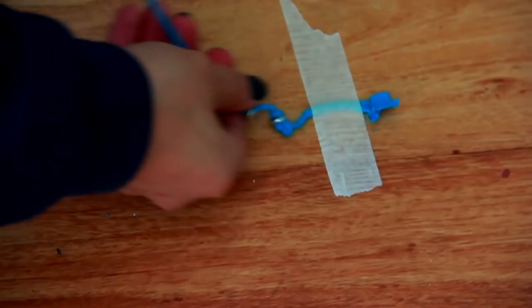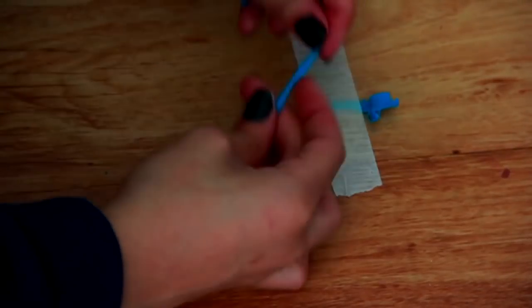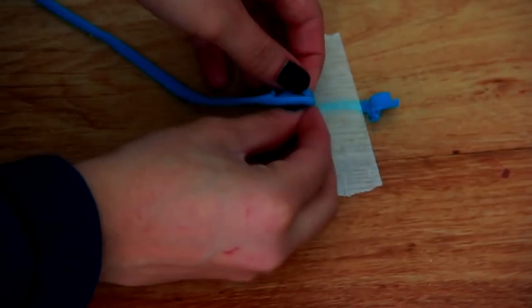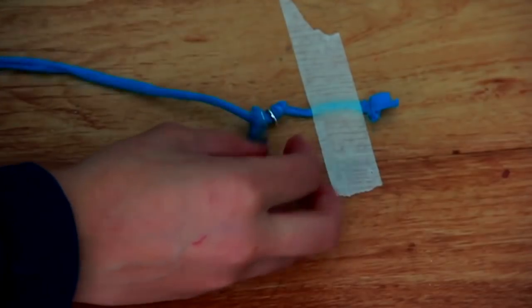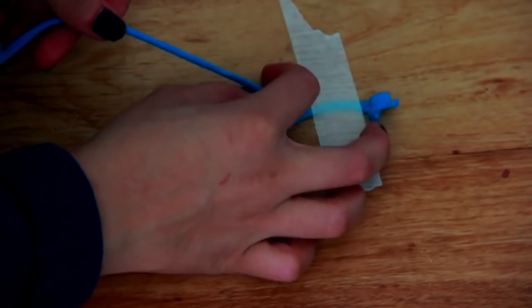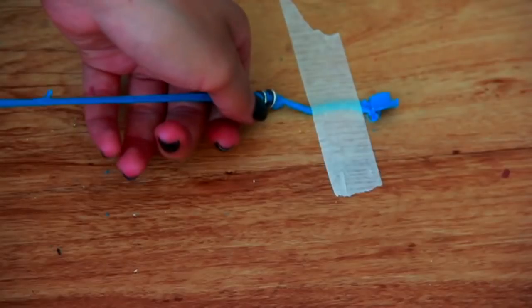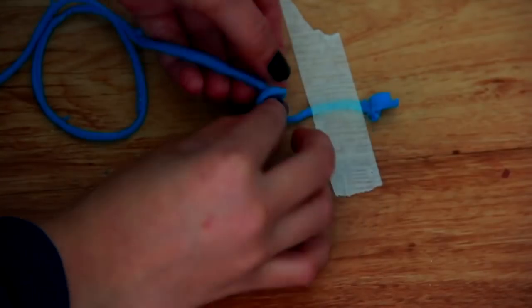So I'm just basically adding a little metal bead like this, and then I'm going to tie a knot right underneath where the bead is. I'm going to add another metal bead and then secure it underneath with a knot, and I'm just going to keep doing that until I get to the very end of the bracelet.